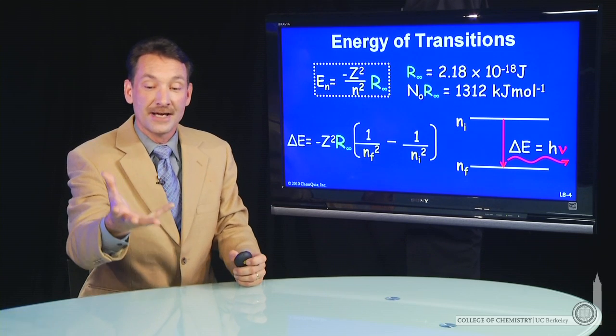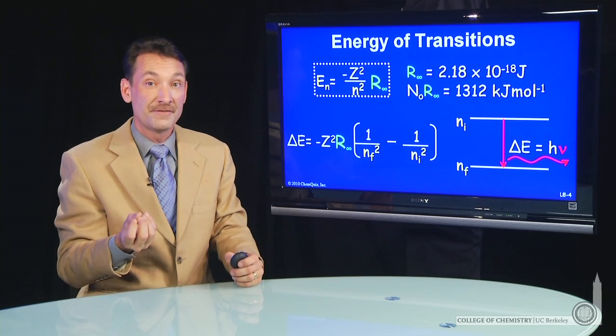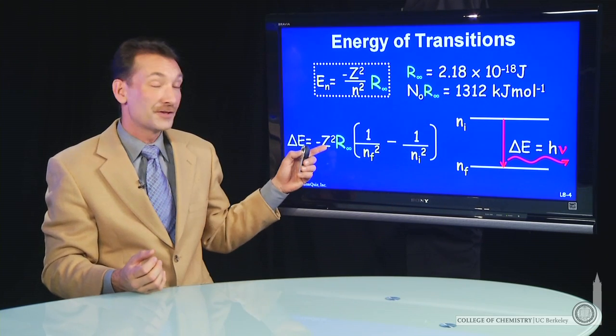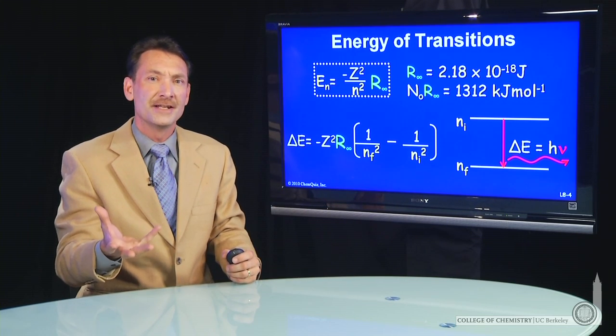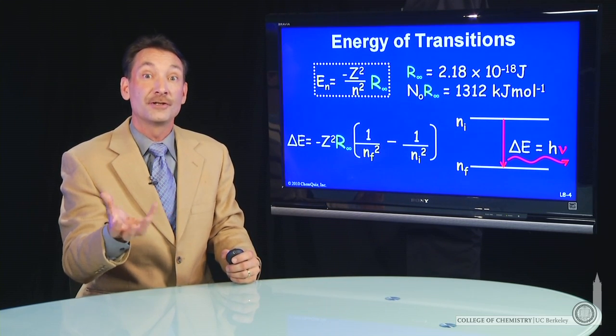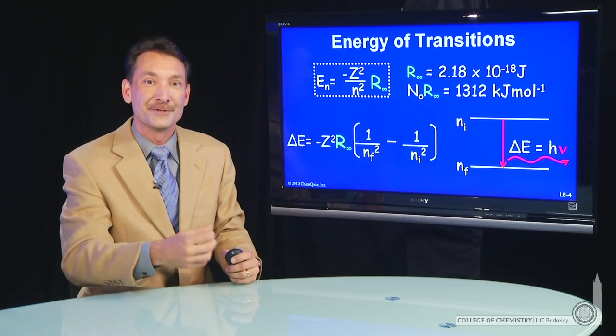This will allow us to take photons that we see being emitted from an atom and correlate those to transitions within the electronic structure. And that's how we'll determine the electronic structure and how we'll learn something about the structure of atoms.